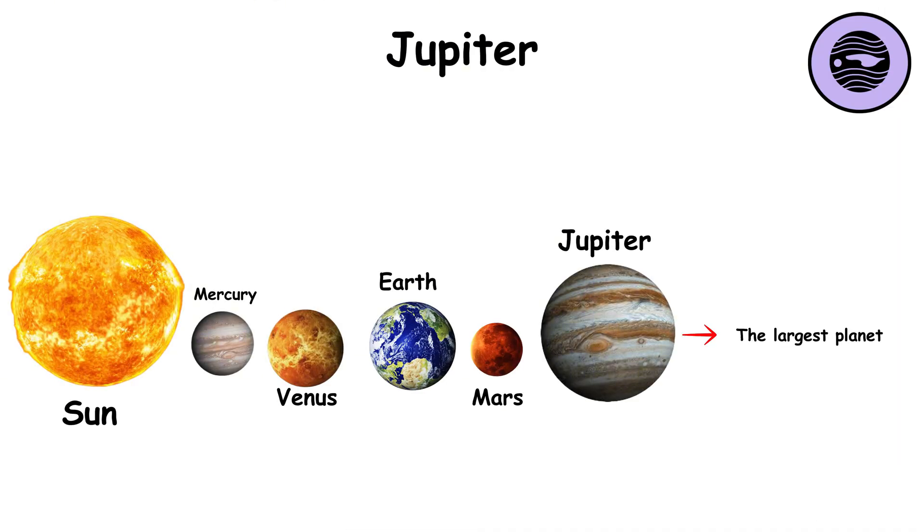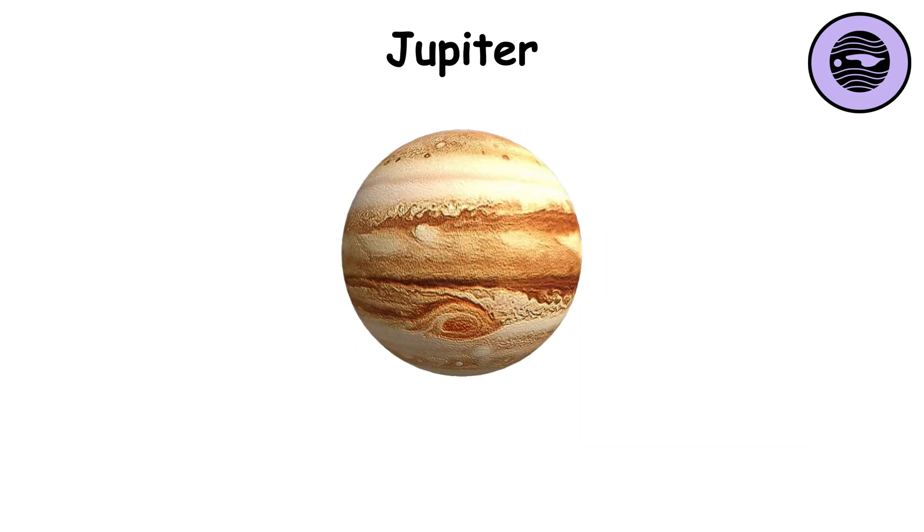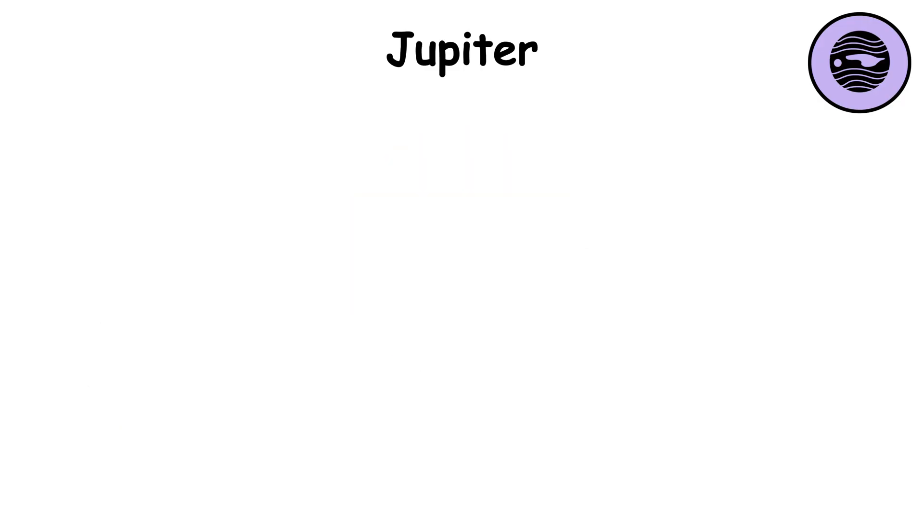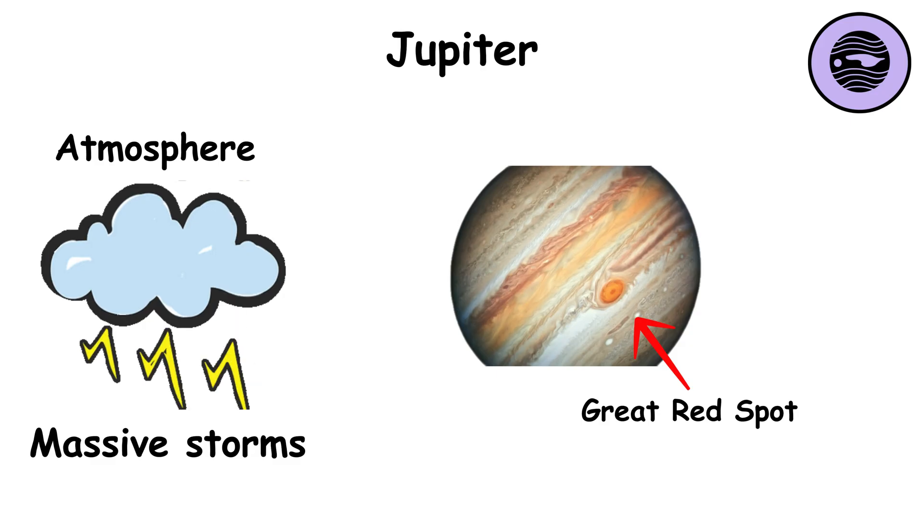Jupiter is the largest planet in the solar system, a gas giant made mostly of hydrogen and helium. Its diameter is 11 times greater than Earth's, and its mass is 318 times that of Earth. In the upper layers of Jupiter's atmosphere, the temperature is approximately negative 234 degrees Fahrenheit. Its atmosphere is filled with massive storms, the most famous being the Great Red Spot, which has existed for centuries.